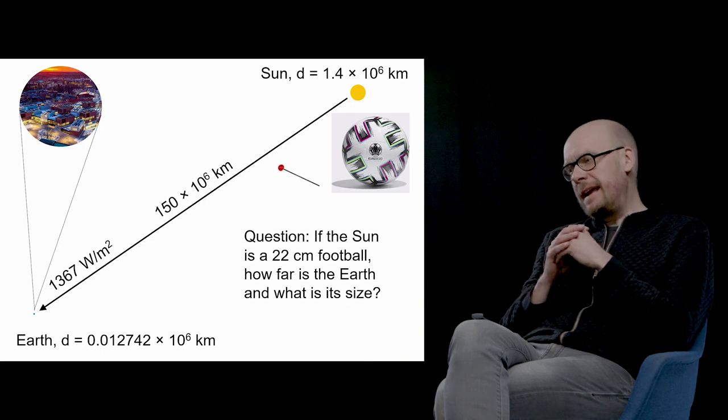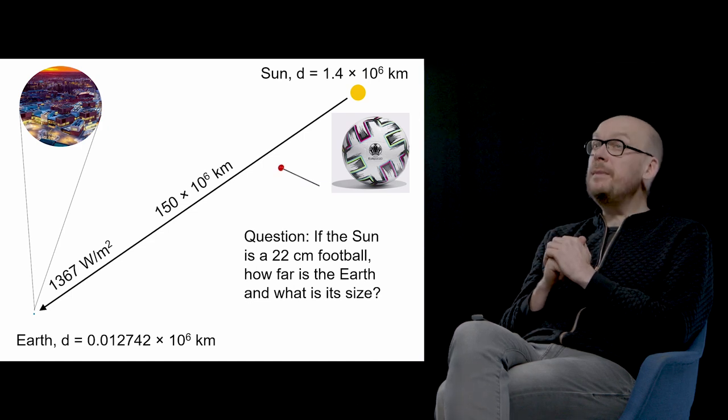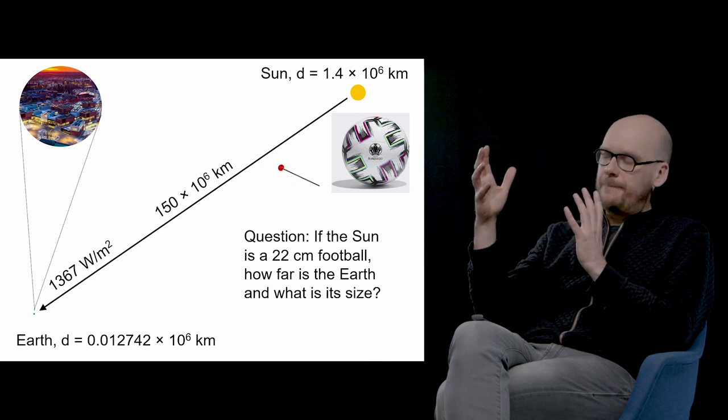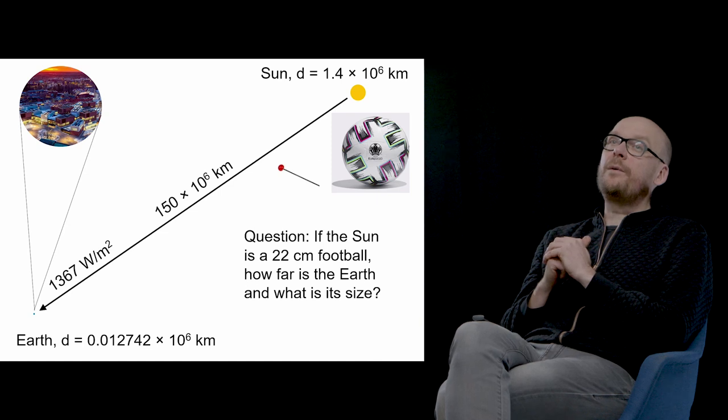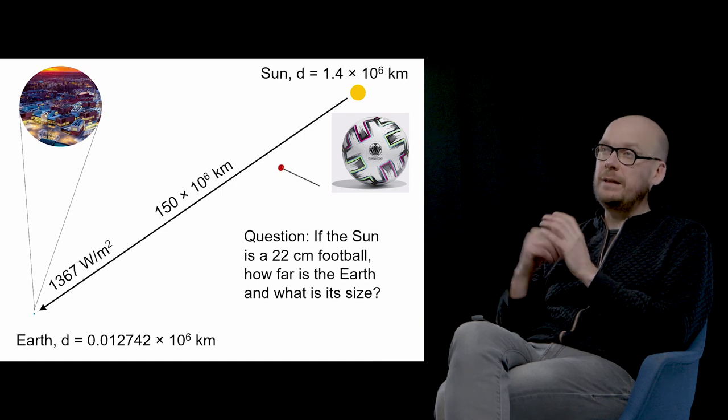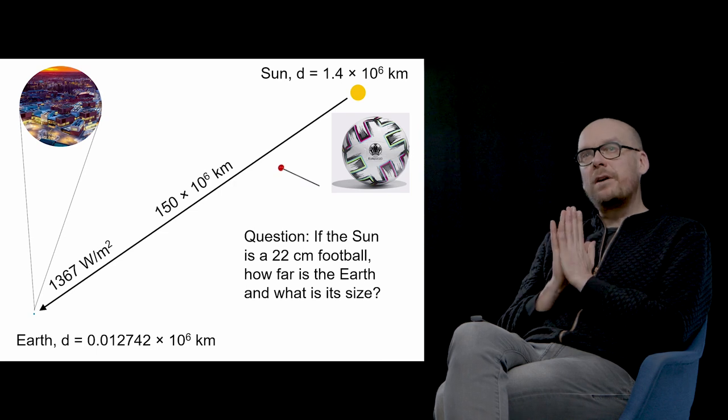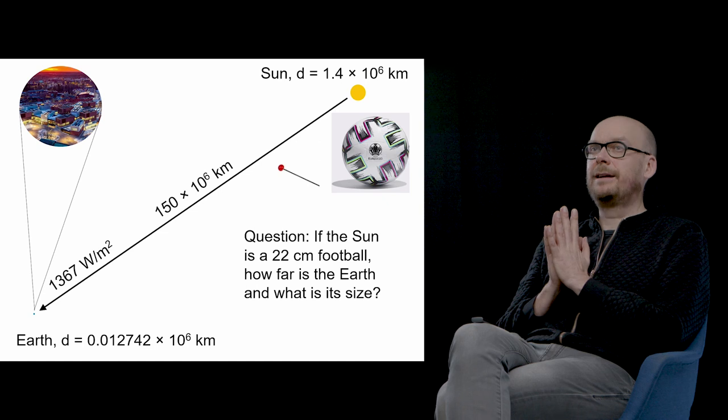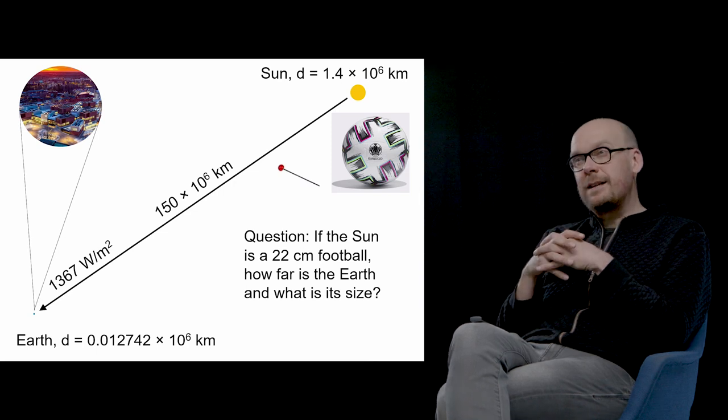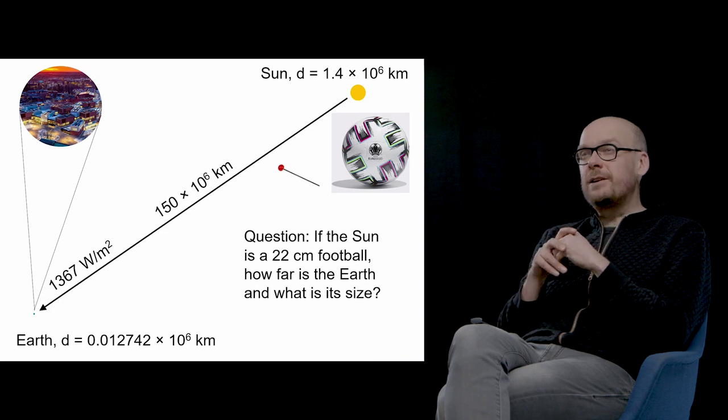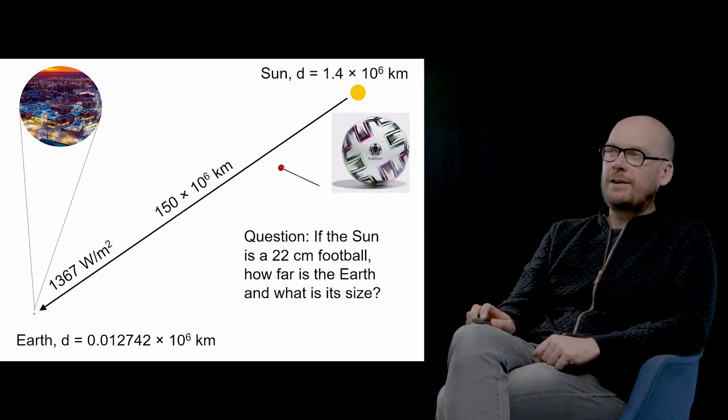This tries to explain the scale of the phenomenon. When the radiation comes to the earth, its intensity has decreased to 1367 watts per square meter outside of the atmosphere. The diameter of the earth is 0.0127 million kilometers, significantly smaller compared with the size of the sun. The question to you is: if the sun would be a 22 centimeter football, how far is the earth and what is the size of the earth? I will give you the answer a bit later.